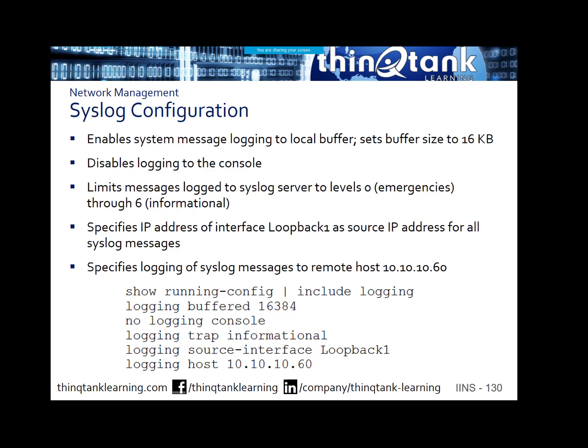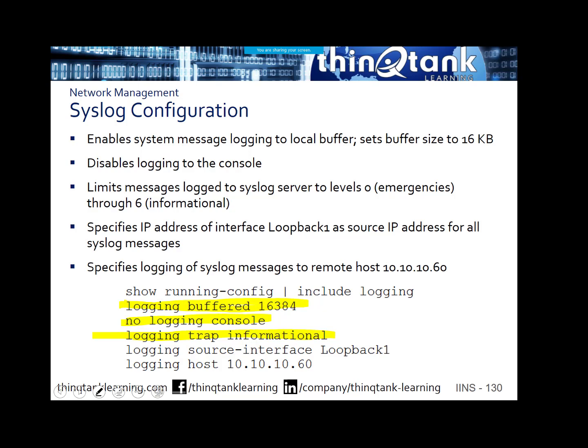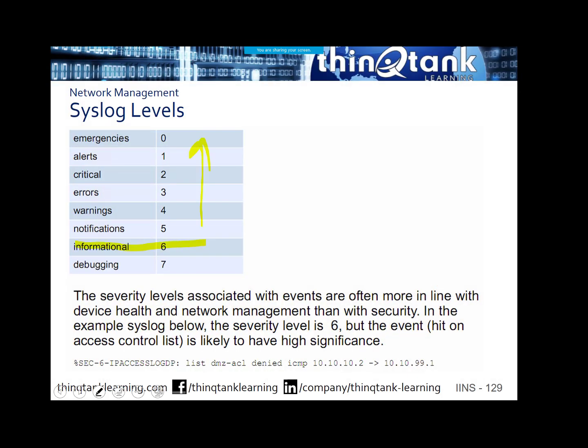In this particular case, logging buffered means go ahead and store that in my DRAM up to that amount of data. Logging to the console is something we can turn off — it gets kind of annoying if you're trying to do configurations on the console. I want to trap informational — when you set up your trap command, you specify the logging level name or you could specify the number. In this case they said informational, which means we're going to be logging level six and below. Level seven provides the most amount of detail; level zero is the most critical type of events.